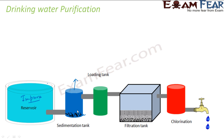The relatively pure water from the sedimentation tank then goes to a filtration tank. This water still has fine impurities. In the filtration tank there are layers of sand, gravel, and coarse stones — sand on top, then gravel, then coarse stones. The sand particles are charged, so when water flows through, the fine impurity particles are attracted to the charged sand and removed, giving more pure water.